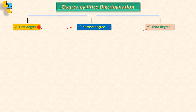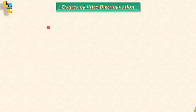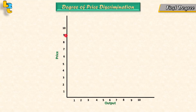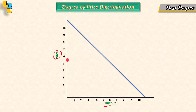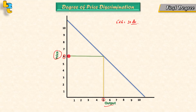Let's look at first degree price discrimination. On the graph, the Y-axis is price and the X-axis is output. This is our demand curve. Our seller sells 5 units at 6 rupees, which gives 30 rupees in revenue.